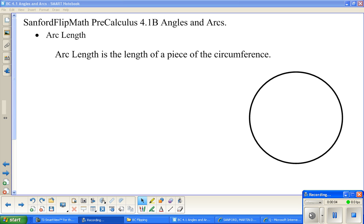Welcome to Sanford Flip Math. This is Pre-Calculus. We are working through the Demana-Waits-Foley-Kennedy book, either fourth or fifth edition. We are continuing with our intro to trig stuff, angles and arcs. We are in section 4.1. Last time we talked about different ways to represent angles. This time we need to talk about arc length.